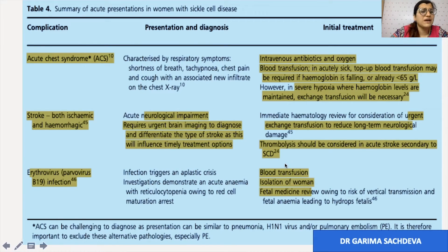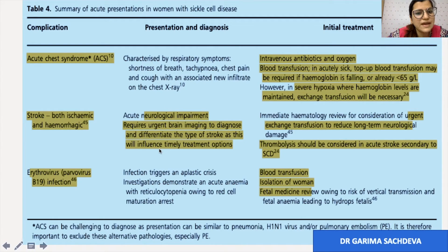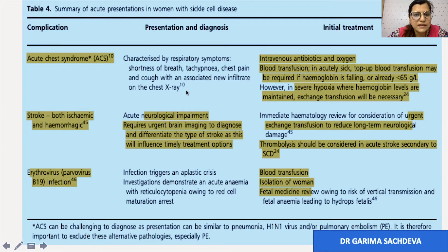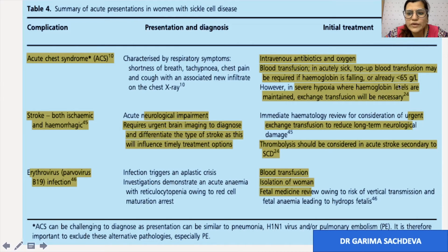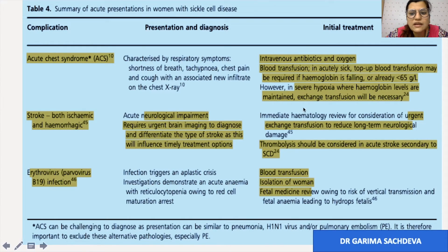Acute chest syndrome is characterized by respiratory symptoms like shortness of breath, tachypnea, chest pain, and cough, with infiltrates on X-ray. It is managed primarily with antibiotics and oxygen. If haemoglobin is less than 6.5, give top-up transfusion; in severe hypoxia where haemoglobin levels are maintained, give exchange transfusion.